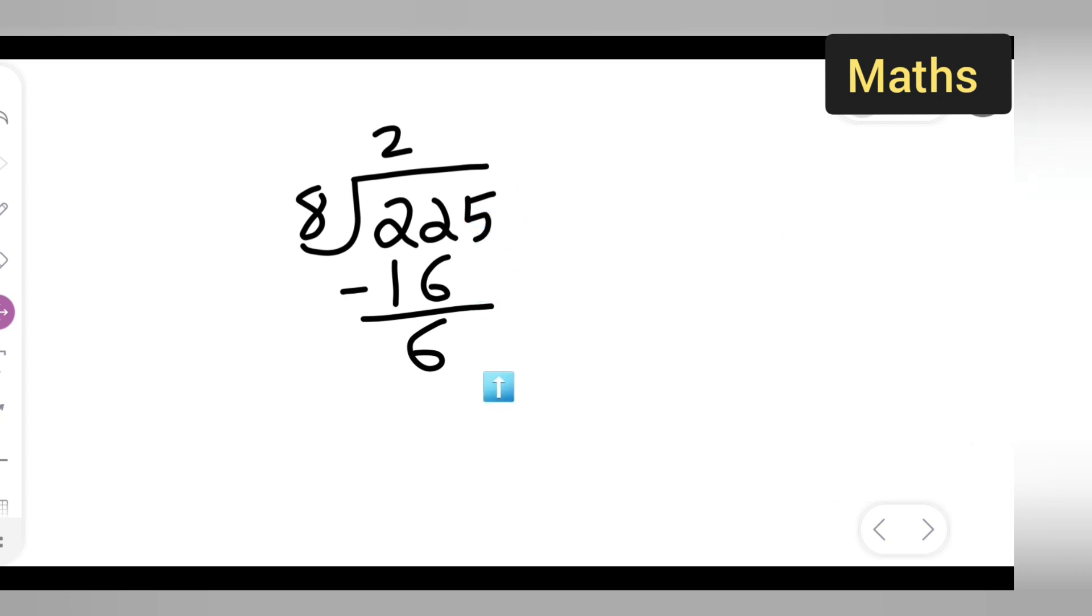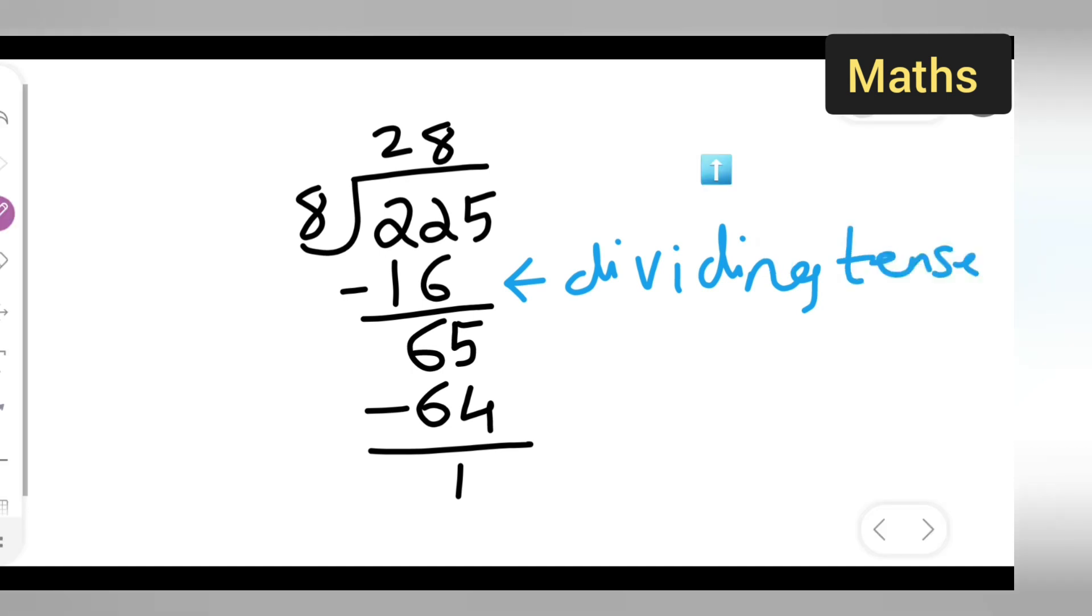Then what I'll have to do is bring this 5 down. Bring it down over here. So now you will get 8, 8s are 64. If you do minus you will get 1. So this is dividing tens. Here it will be dividing ones.